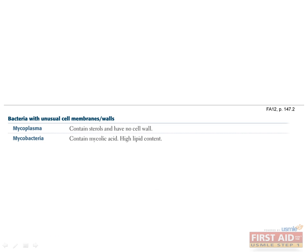Two bacteria are important to mention because of the unique properties of their cell walls. Mycoplasma is a bacterium which does not have a cell wall. Mycobacterium, on the other hand, has a cell wall, but it contains mycolic acid in addition to polysaccharides, peptidoglycans, and lipids. These unusual cell wall properties pose challenges to gram-staining and identifying mycoplasma and mycobacterium.